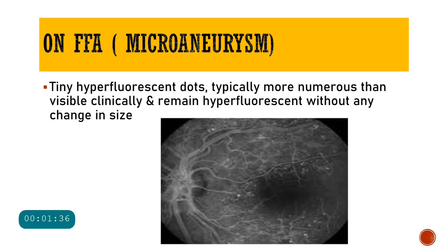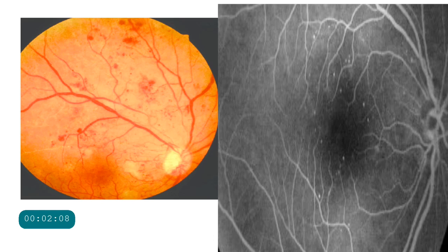On fundus fluorescein angiography, microaneurysms appear as tiny hyperfluorescent dots. Typically they are more numerous than what we see clinically. One important point to remember about FFA in microaneurysms is that they will remain hyperfluorescent without any change in size — they will not fade throughout the FFA. As you can see in this picture, these tiny white hyperfluorescent dots represent microaneurysms.